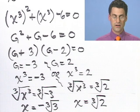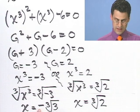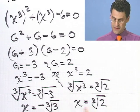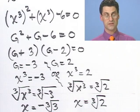And so what I see here are two real solutions. One is x equals minus the cube root of 3. And the other one is x equals the cube root of 2. Remember, these are cube roots, not square roots.